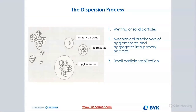I want to give you a quick overview of the dispersion process before we dive into different types of equipment. When we disperse, what we're doing is breaking up invisible binding forces called Van der Waals forces, turning these larger agglomerates — particles that are fused together with almost electromagnetic Van der Waals forces — into smaller pieces. We don't want to destroy the pigment or the particles; we just want to break them up and separate them, turning these larger blocks into aggregates.